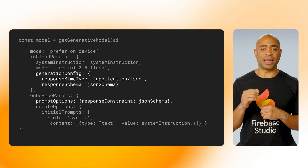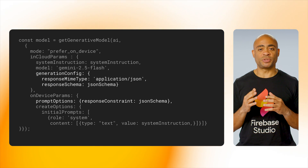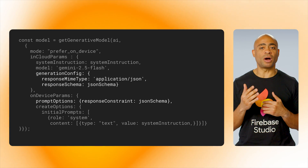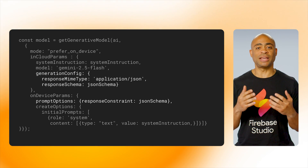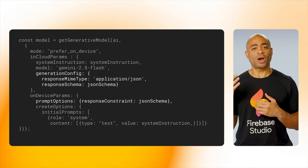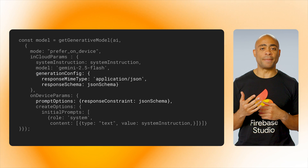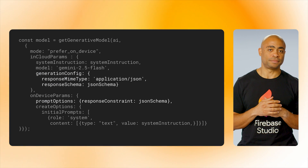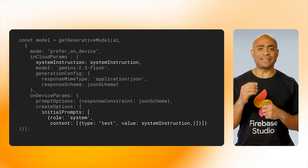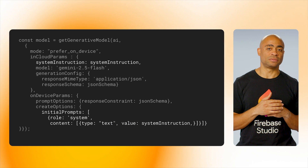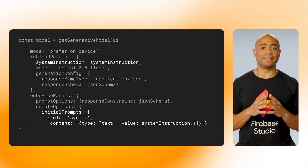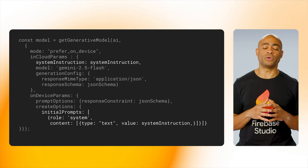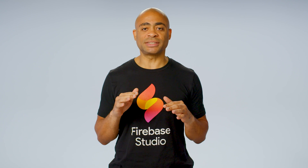In the demo case here, prompt options is set to be a schema object that's defined elsewhere. This would be the same as the generative config object for the parameters of a cloud-hosted model. You can also set the initial prompts for the on-device model, which would be similar to the system instructions in the case of the prompt for a cloud-hosted model. Once you have all this configured, you can test out your prompt.